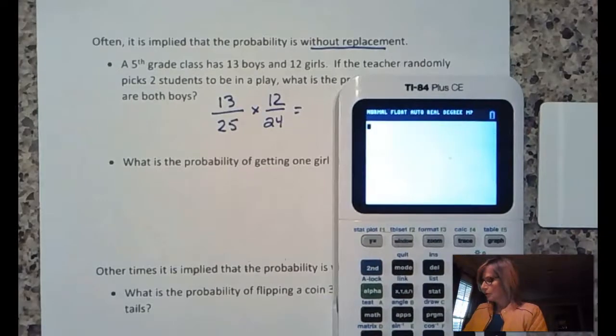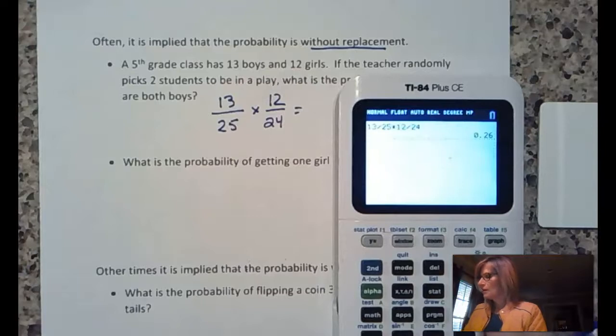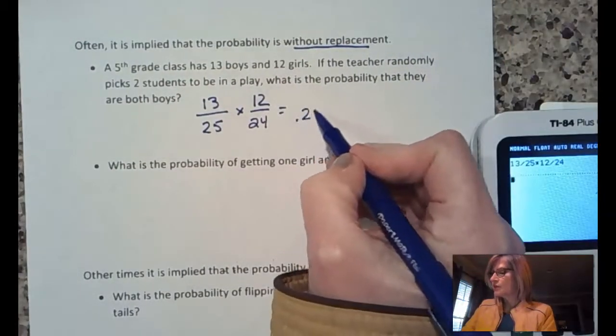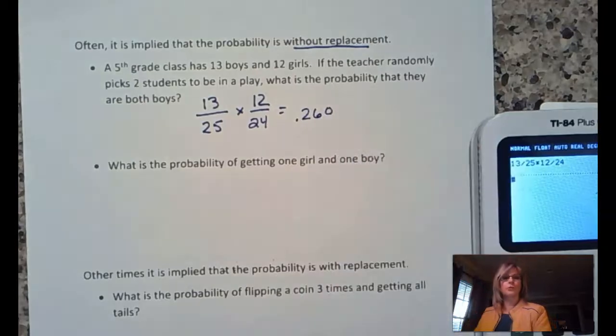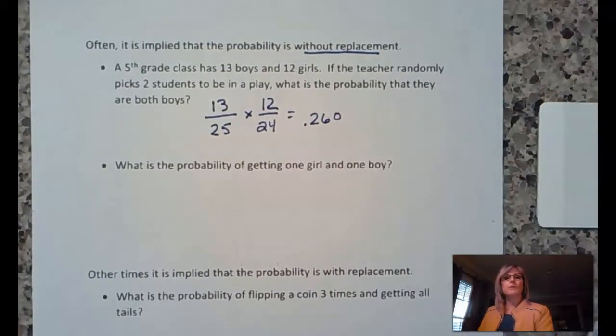Okay, so we will multiply that together. 0.26 or you could call it 0.260 if you want to. So, what's the probability of getting one girl and then one boy?